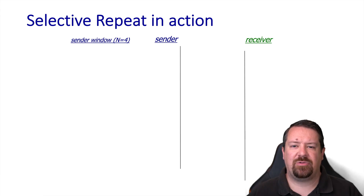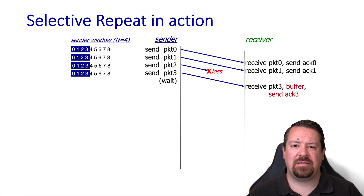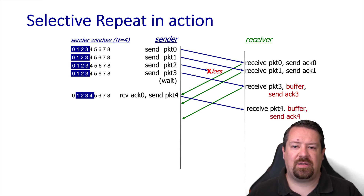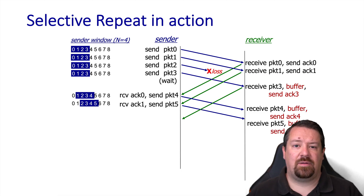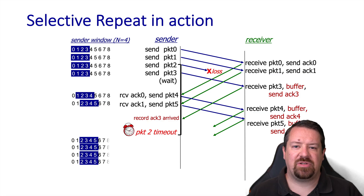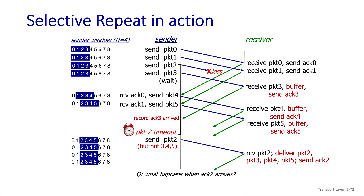In the selective repeat time sequence diagram, with a window size of n, the sender sends packets 0 through 3, and packet 2 is again lost. This time, when packet 3 arrives, the receiver acknowledges packet 3 individually — it is not sending duplicate ACKs. As those ACKs arrive back at the sender, it moves the window forward and sends new packets. When ACK 3 arrives, the sender records it but cannot advance the window because it still lacks an ACK for packet 2. Eventually the timeout expires for packet 2, the sender retransmits it, and when it arrives, the receiver delivers packets 2 through 5 in order. When ACK 2 arrives at the sender, it advances the window multiple places using the already-recorded out-of-order acknowledgements.